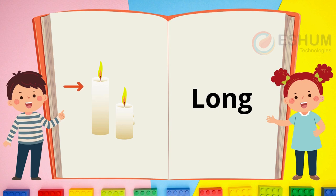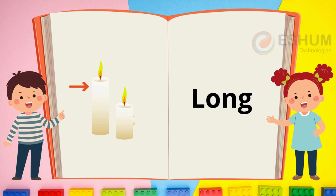Long. In the picture you see two candles. The arrow is pointing to the long candle. Look at two candles around you — which candle is long? Which candle is short?